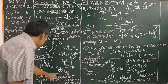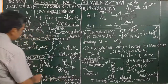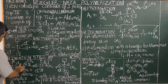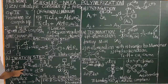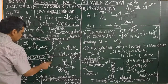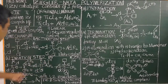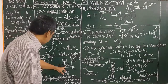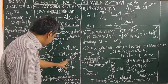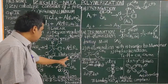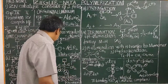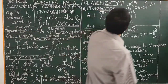Following formation of the metal-alkene complex, a 1,2-insertion reaction occurs, inserting the alkene into the metal-carbon bond, leaving an empty coordination site, so the complex can undergo further propagation.